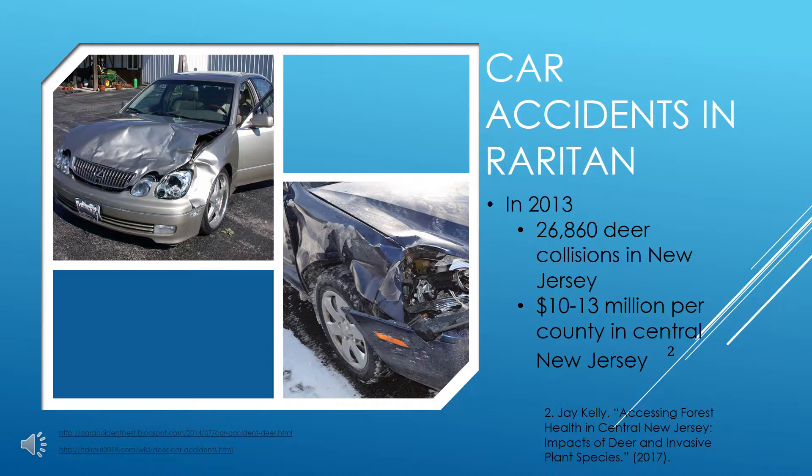If you remember the picture of the land usage of the Raritan Basin, you'll notice that there is very little land that is considered forest, especially along the river itself. Because there is less forest and more edge, the deer have less space to stay contained within the forest and therefore spread out onto open spaces and streets.